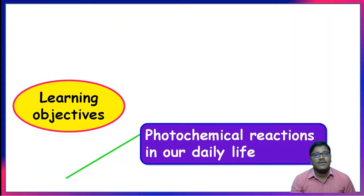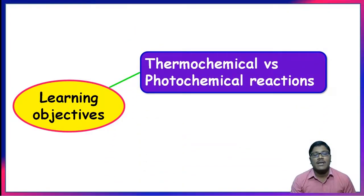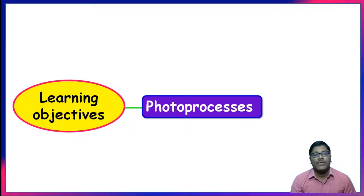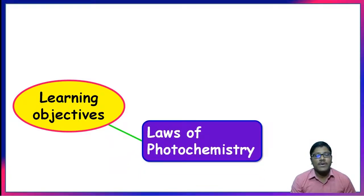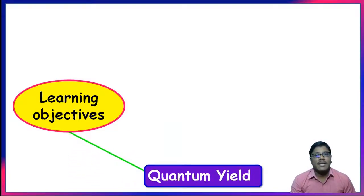Learning objectives: through this video lesson we are going to discuss about the definition of photochemical reactions and examples of photochemical reactions in our daily life, differences between thermochemical reactions and photochemical reactions, different photo processes, laws of photochemistry, and finally about the quantum yield.